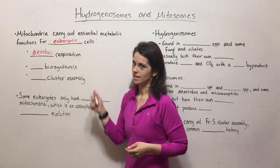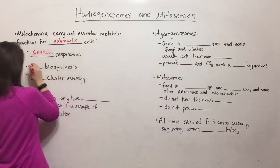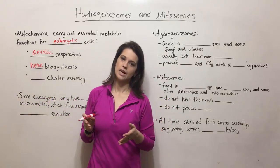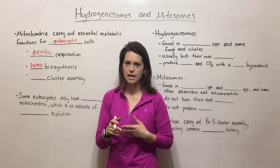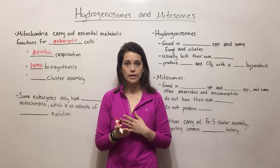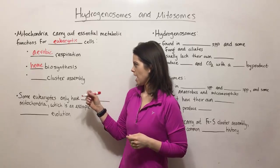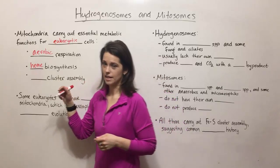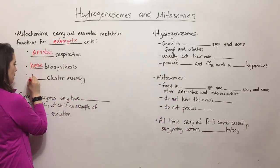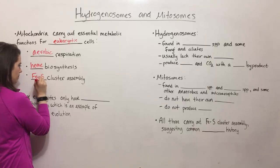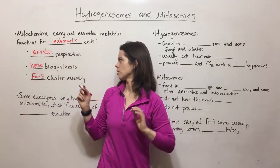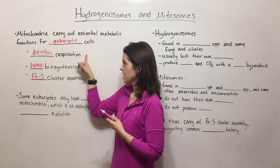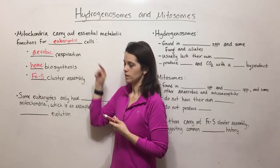Another major metabolic function is heme biosynthesis. Heme is a critical compound for many different kinds of proteins, including catalases, cytochromes, myoglobin, and hemoglobin. The final function we'll discuss today is iron-sulfur cluster assembly. Iron-sulfur clusters are important in various redox proteins, including those in the electron transport chain used in aerobic respiration.